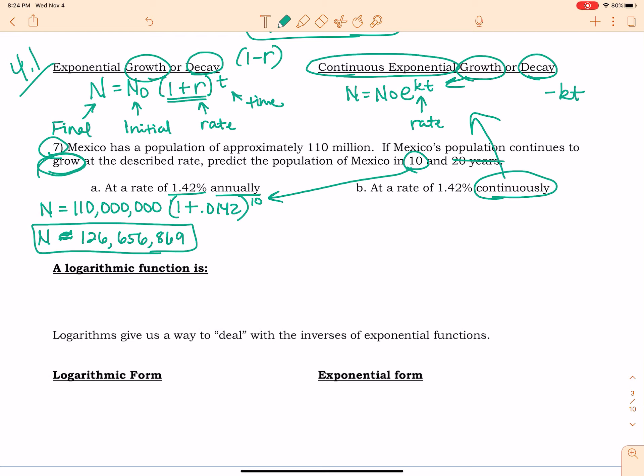Part B, at a rate, the same rate, but now continuously. So I'm looking at my initial value of 110 million, and that's going to be times E to the positive KT because I'm looking at growth. So this is the rate, and then of course it gets multiplied by the time, which is 10.